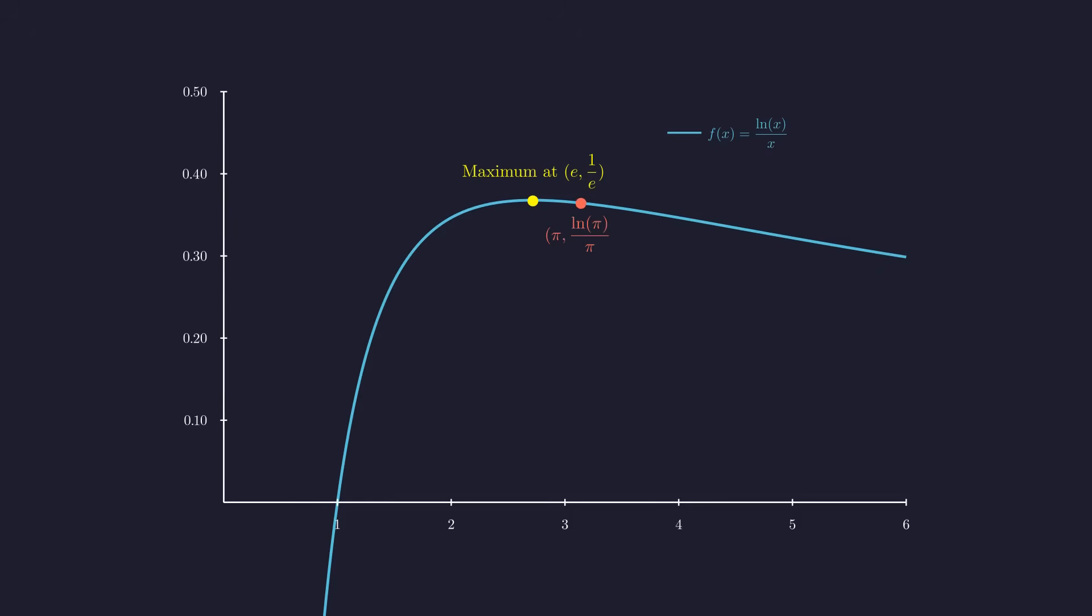Now, let's locate pi on our graph. Since pi is larger than e, it sits on the declining portion of the curve. And you can see it clearly. The function value at pi is definitely lower than the peak at e.